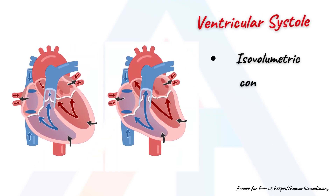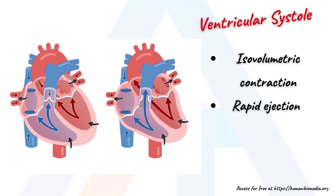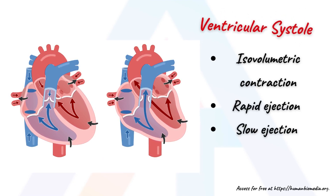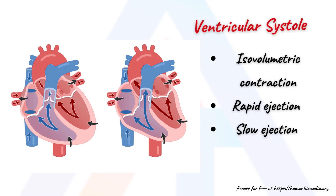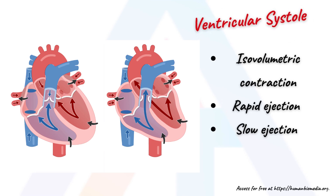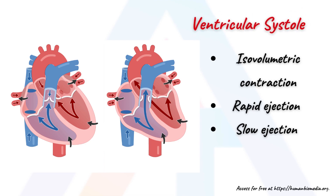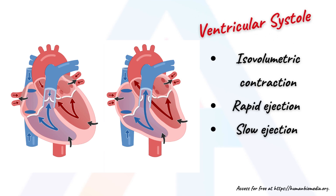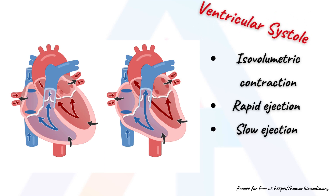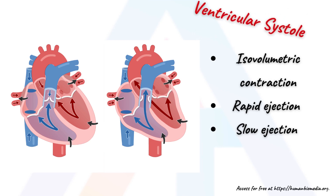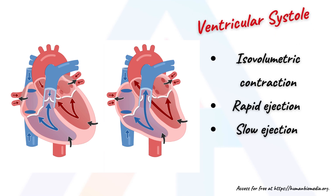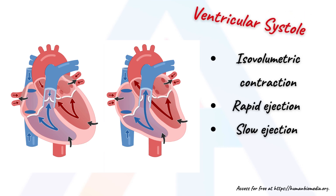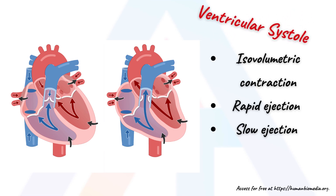Ventricular systole is made up of three phases. Initially, as the muscles in the ventricles contract, the pressure of blood within the chamber rises, but it is not yet high enough to open the semilunar valves. However, blood pressure quickly rises above that of the atria, which are now relaxed and in diastole. This increase in pressure causes blood to flow back toward the atria, closing the tricuspid and the mitral valves and producing the first heart sound. Since blood is not being ejected from the ventricles at this early stage, the volume of blood within the chamber remains constant. This initial phase of ventricular systole is known as isovolumetric contraction.